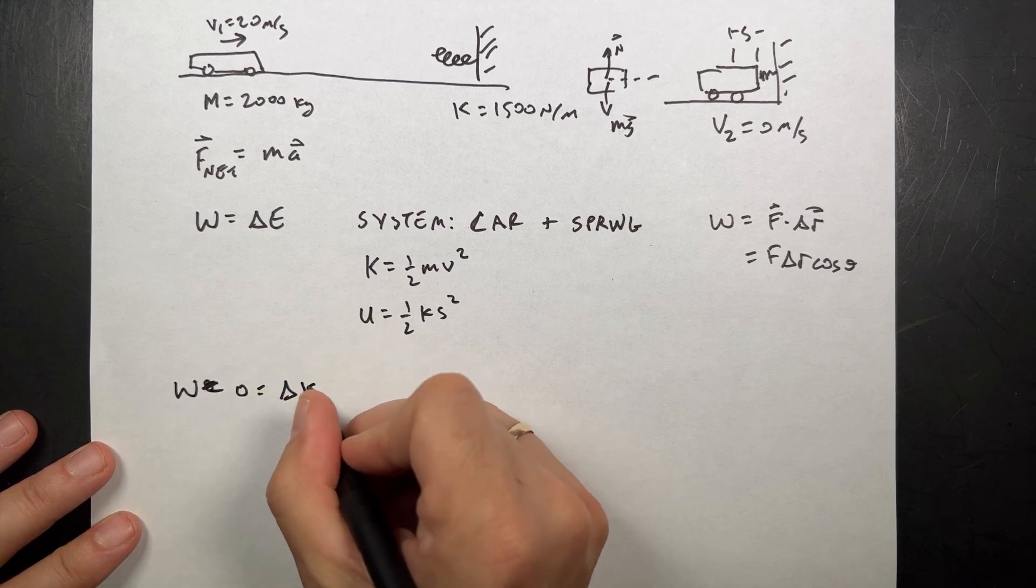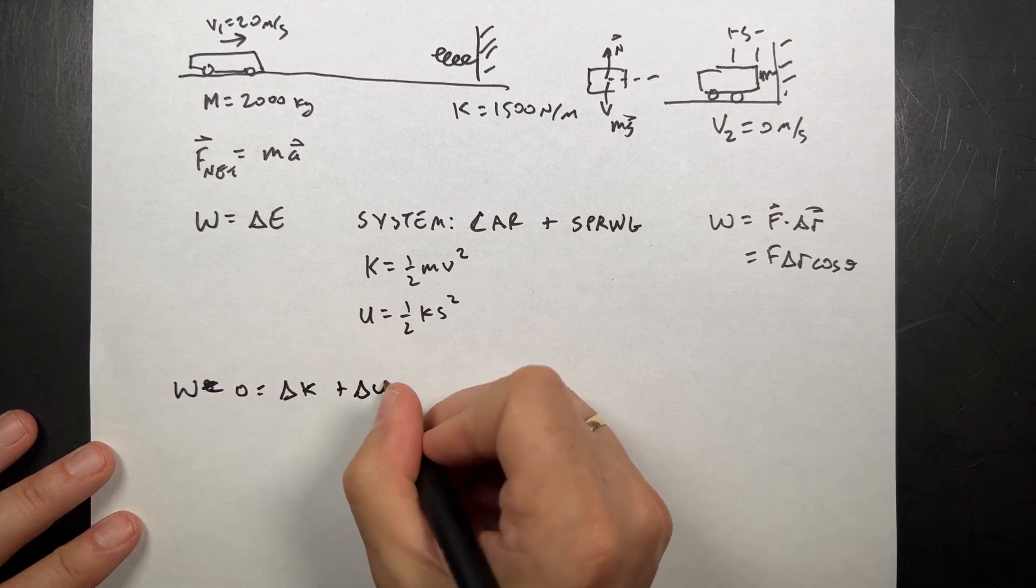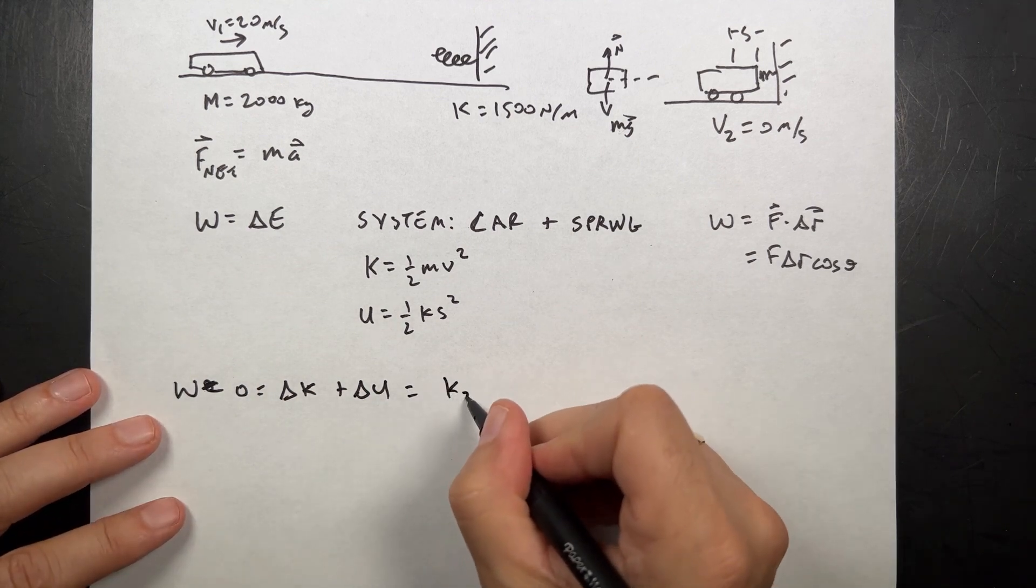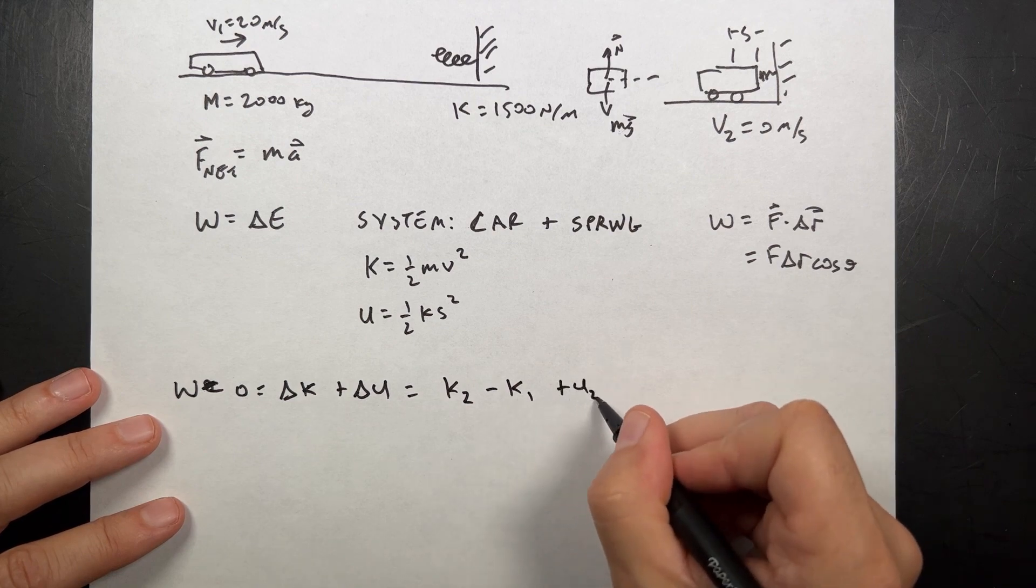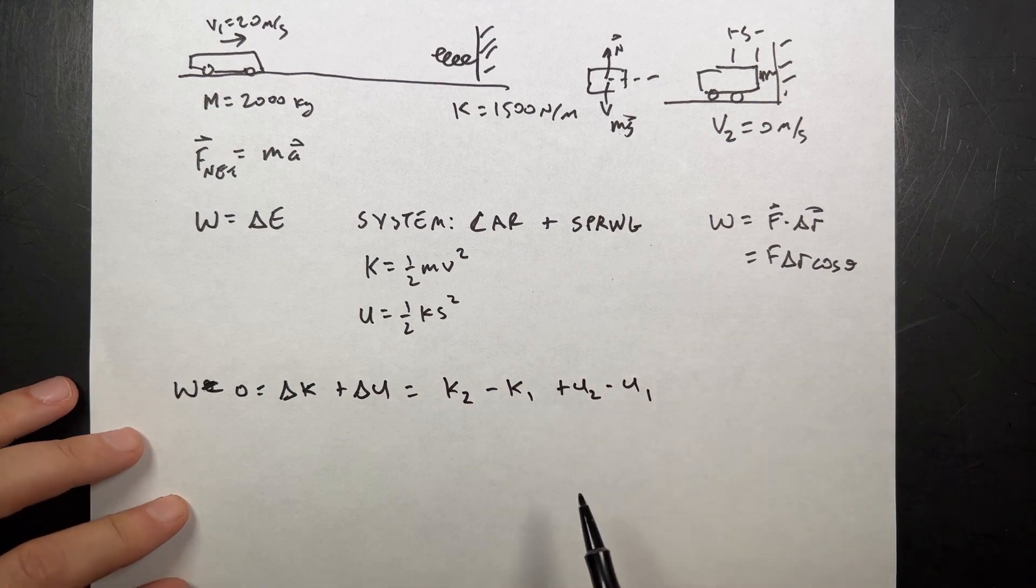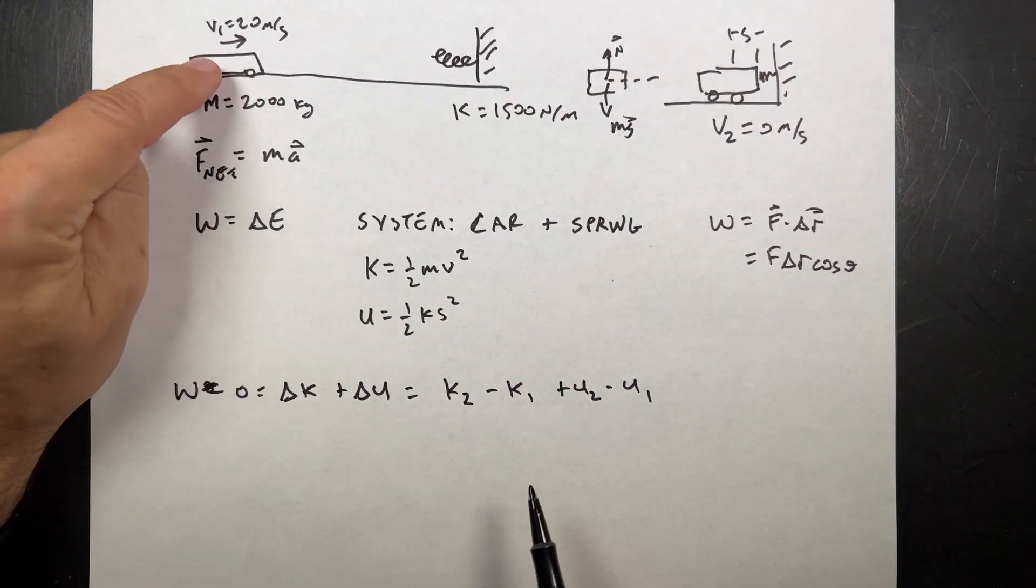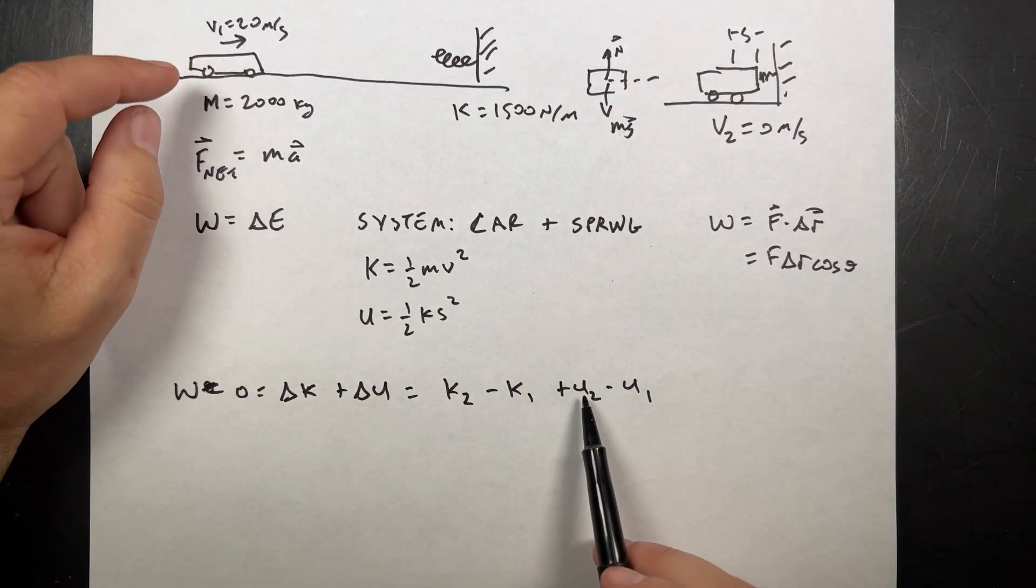And that's going to be the change in kinetic energy plus the change in spring potential energy. So let's just write that out. That's going to be k2 minus k1 plus u2 minus u1. So this is the kinetic energy at position two, the kinetic energy at position one, spring at two, spring at one.